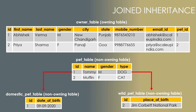The one disadvantage is that whenever you need to read data, you must perform a join every time, because some data comes from the pet table and some from the domestic or wild pet table. With single table you had only one table and no joins were needed. Although Hibernate handles this automatically, it is still a performance consideration. So now it's your choice whether to go with single table or joined strategy.